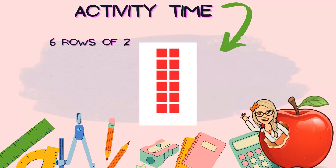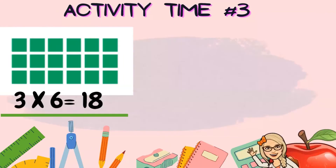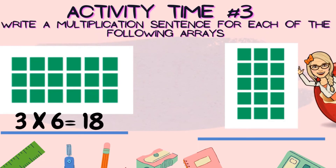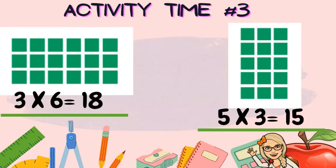Activity number three: write a multiplication sentence for each of the following arrays. The first array has three rows with six in each row — what's the multiplication sentence? Very good job! Now the second array: five times three is the multiplication equation for this array, and that equals 15.